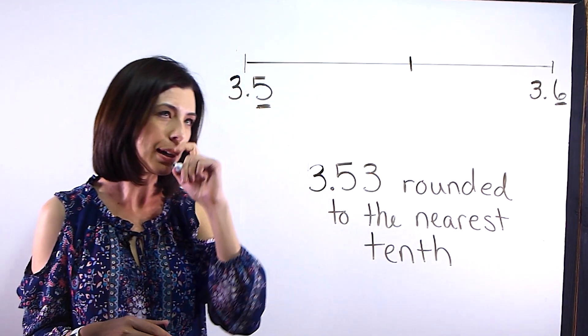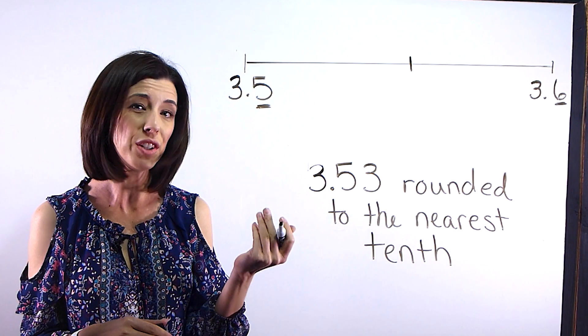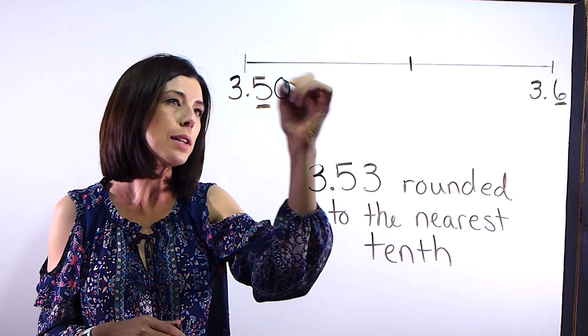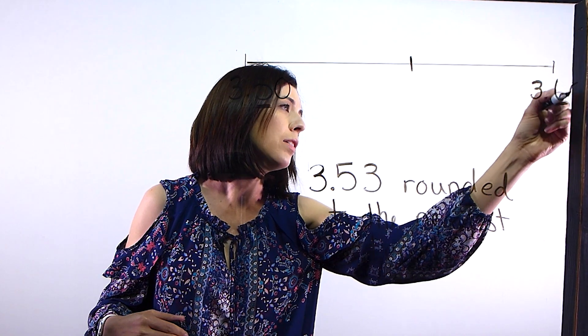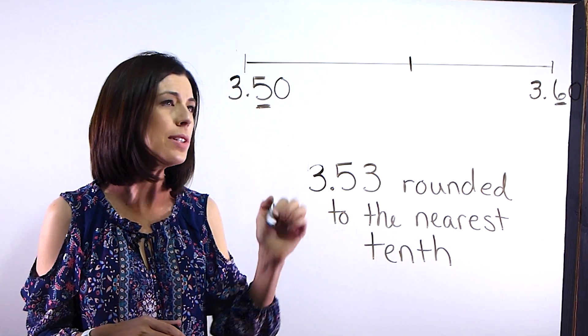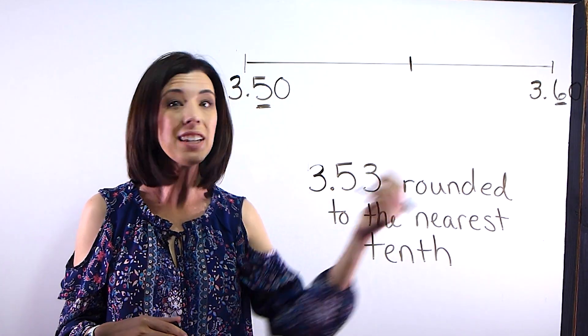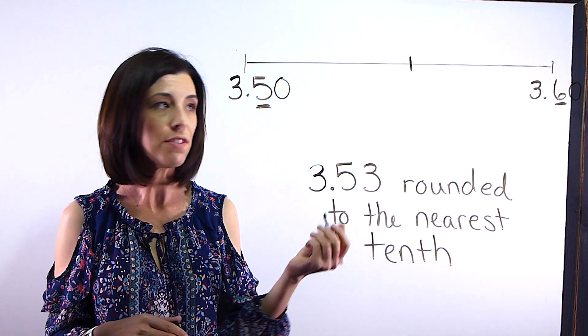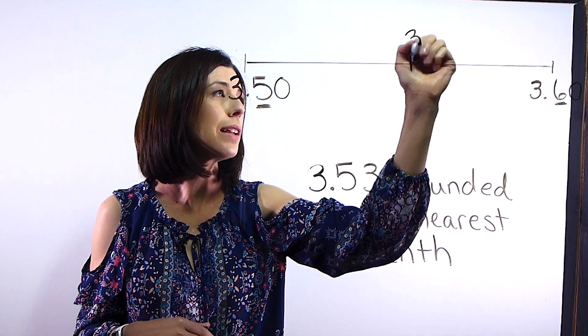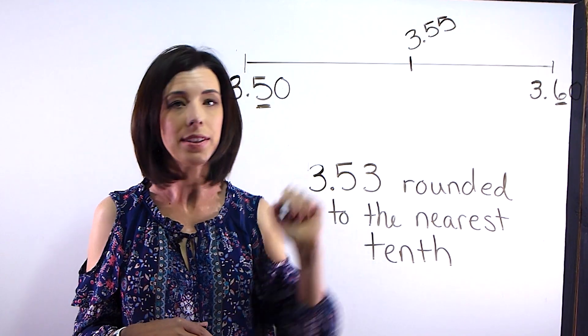So I'm just going to put a little mark here. And an easy way if you're confused and you're like, I don't know what's in the middle, put some zeros on the end here to hold some place values. And think about what's in between 50 and 60. Well we know it's 55. So in the middle is going to be 3 and 55 hundredths.